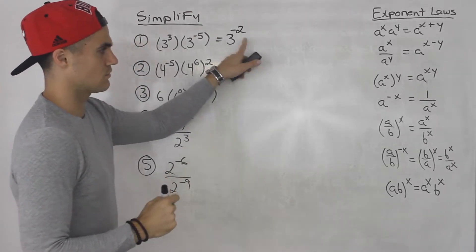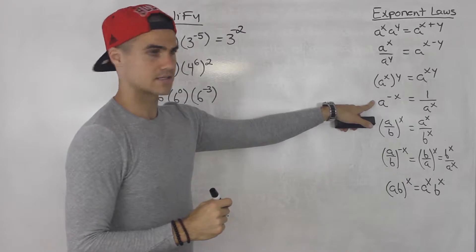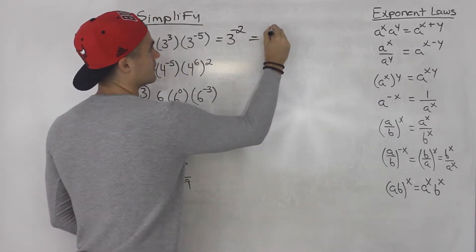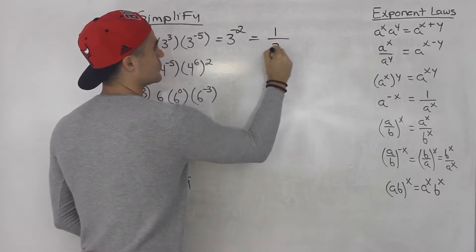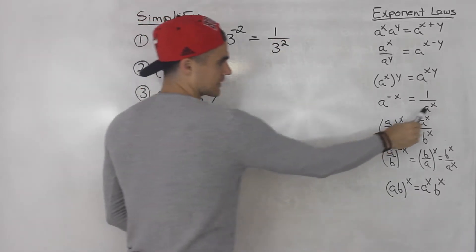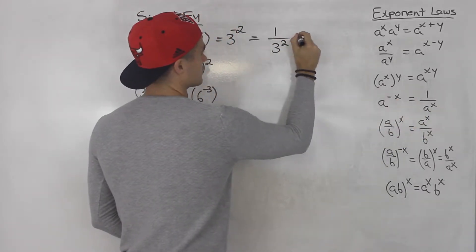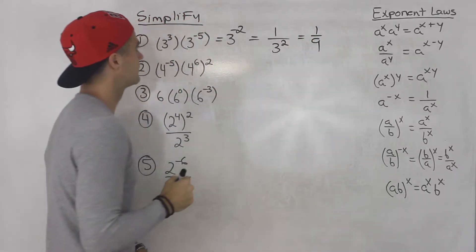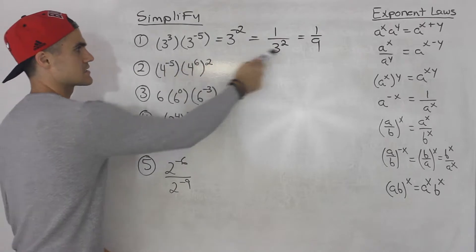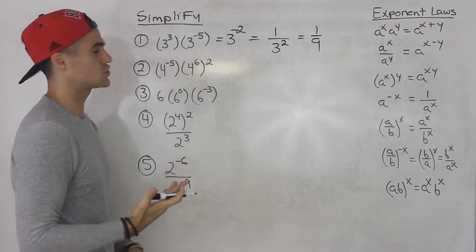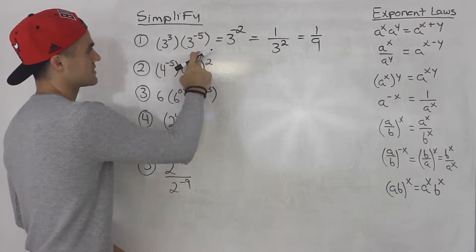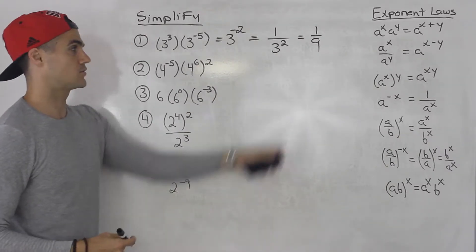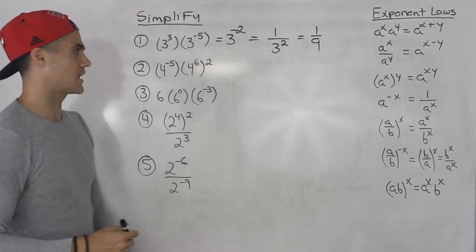So three plus negative five gives us three to the negative two. Three to the negative two is this scenario here — when you have a negative exponent, you go one over three to the power of positive two, changing that exponent to positive. So this ends up being one over nine. This simplifies to one over nine, and you could actually check it in your calculator — plug it in and see if you get the same decimal value.